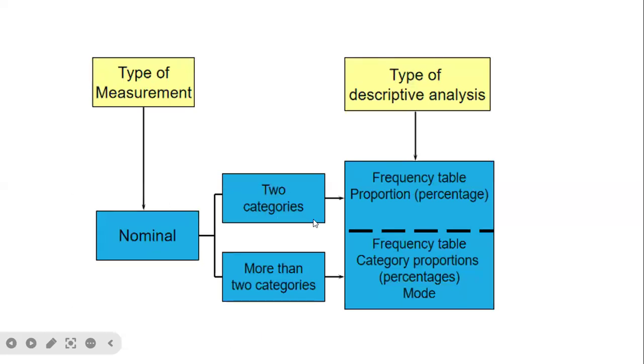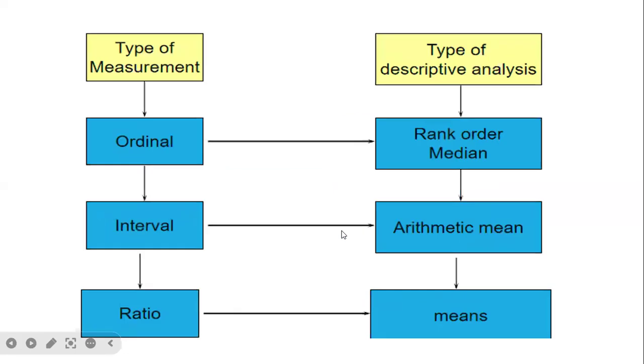Types of measurement: for nominal with two categories, types of descriptive analysis include frequency table and proportion (percentage). For nominal with more than two categories: frequency table, category proportions (percentages), and mode. In case of ordinal scale, that is rank order. For interval: arithmetic mean. In case of ratio: means.